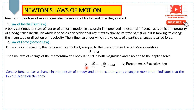Mathematically, we can write F is equal to the derivative of p, where p is the momentum. Momentum is the product of mass and velocity. Because we have the derivative of p, and mass is constant, we keep m outside and take the derivative of v with respect to t, which equals acceleration. So we have F = ma.